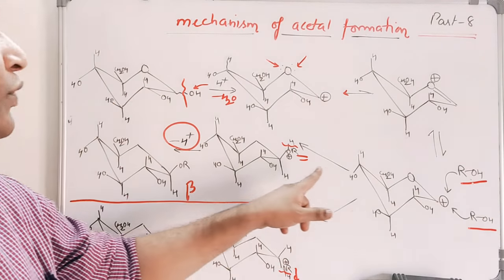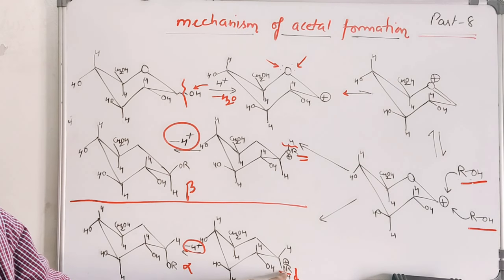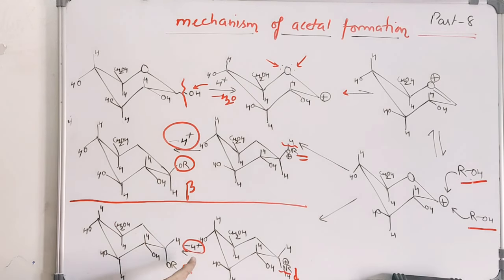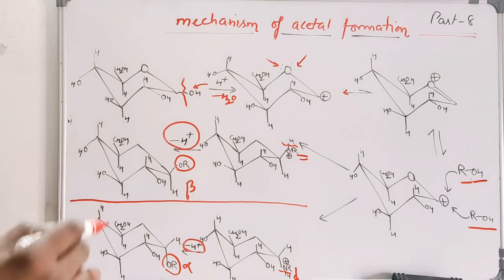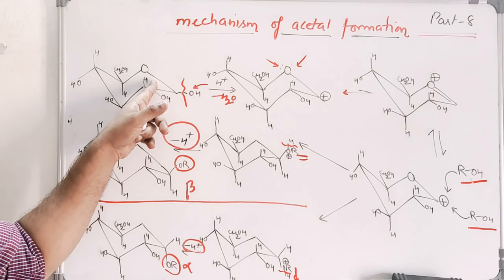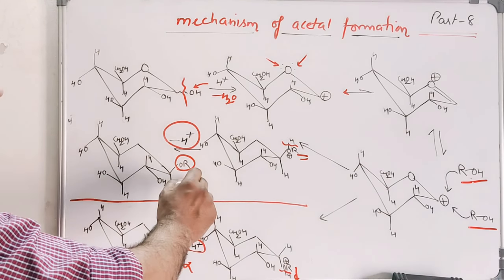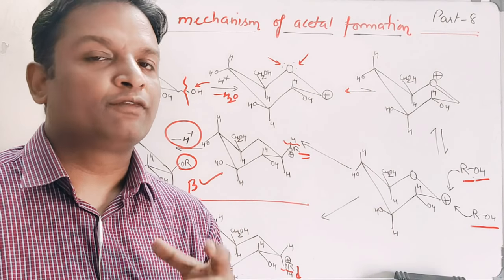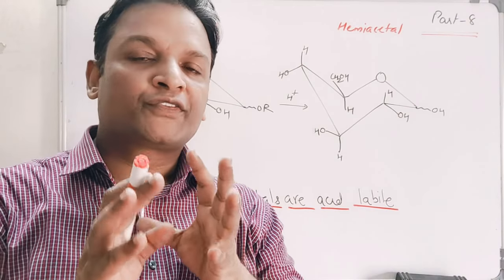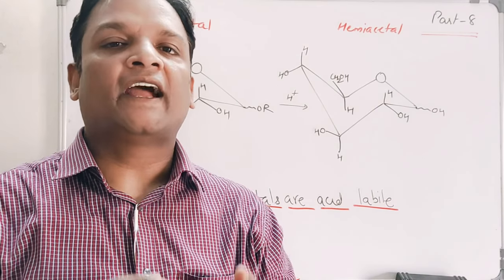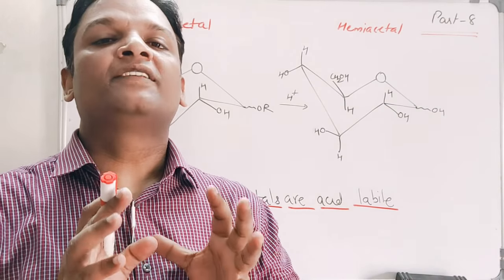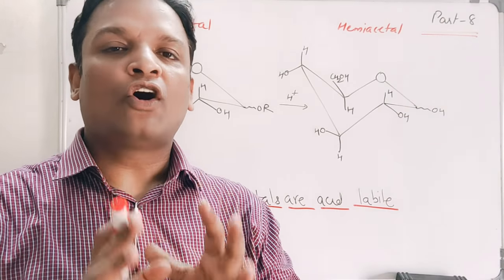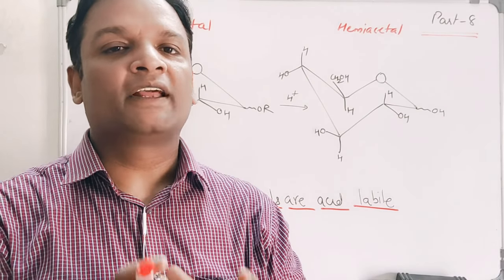No other OH can show this type of delocalization. After this, the carbocation can be attacked by alcohol from below or above, giving us the alpha and beta acetal products. So we started with hemiacetal and we are getting acetal — acetal can be alpha and acetal can be beta. It must be clear to all of us that all acetals are acid-labile, meaning they are not stable in acidic solution. They are stable in basic or neutral solution, but all acetals are acid-labile and unstable in acidic solution.